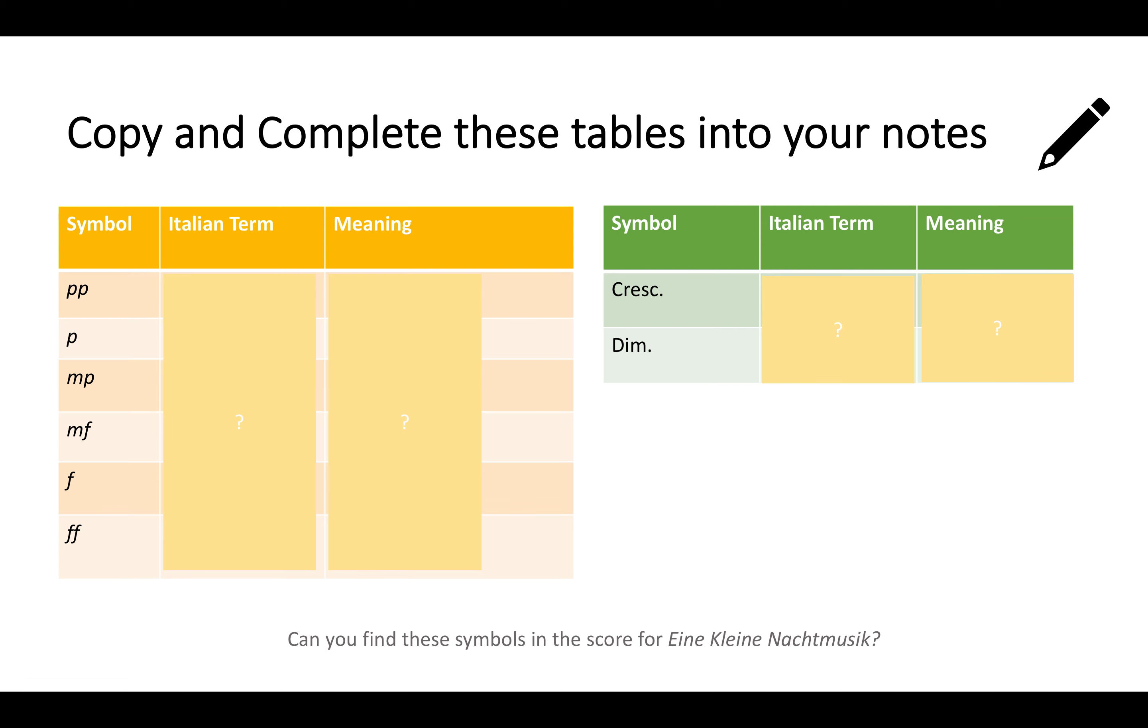I'm going to take away the boxes now so that you can complete your tables by filling in the other words. So piano in Italian means quiet. And when there's two of them, it means very quiet. When there's an M in front of it, that stands for mezzo, which is kind of like medium in English. So medium quiet, medium loud. Loud is forte. Fortissimo is very loud.